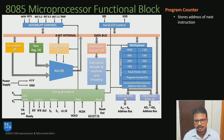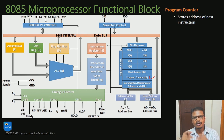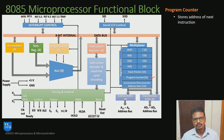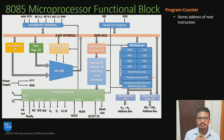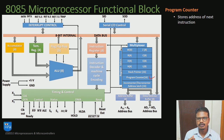Next is the program counter. As you can see on the block diagram, the program counter is available along with the general purpose registers. The program counter is a 16-bit register that stores the address of the next instruction. When executing a program on the 8085 microprocessor, the address of the next instruction to be executed will be available in this program counter.